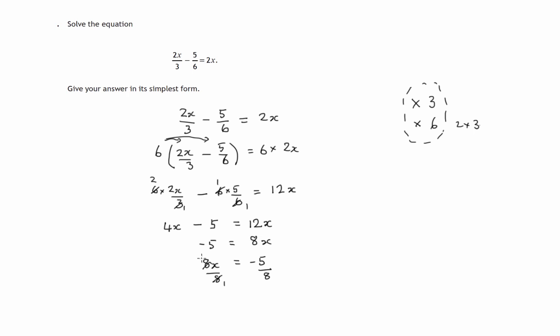These cancel, 8 into 8 equals 1, 8 into 8 equals 1. We've got 1x over 1, that's x equals negative 5 divided by 8, a negative number and the number is 5 eighths. It's negative 5 eighths. So that's our solution to this original equation.